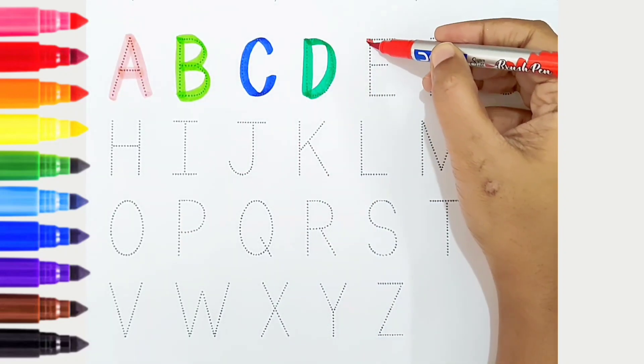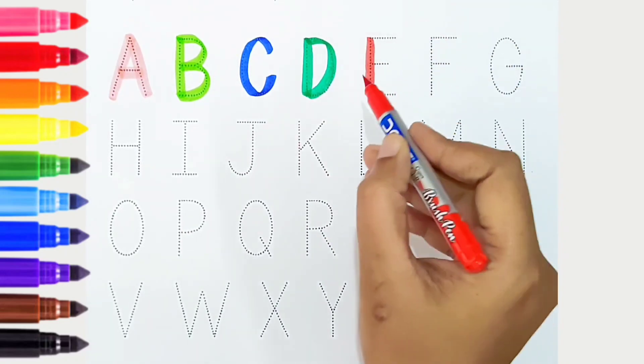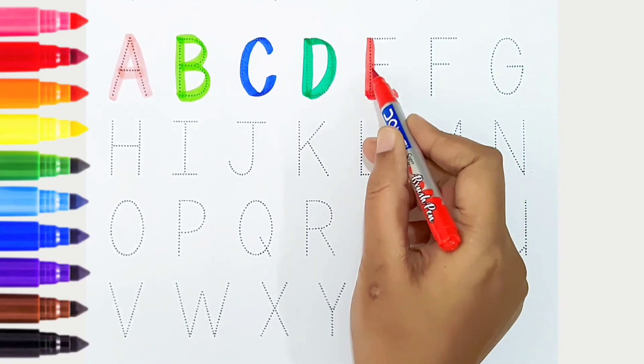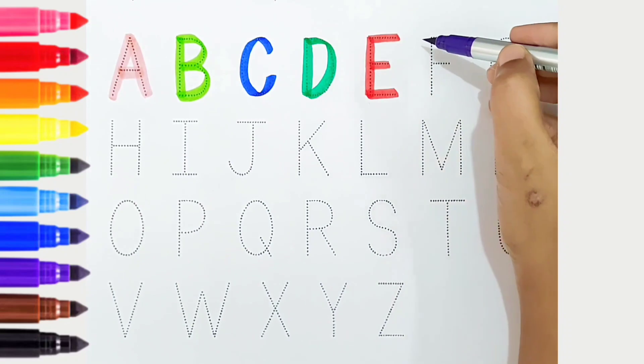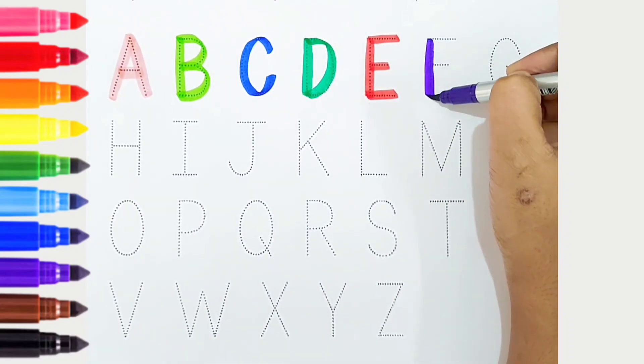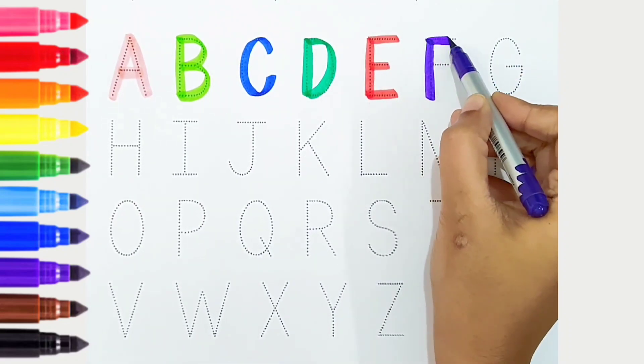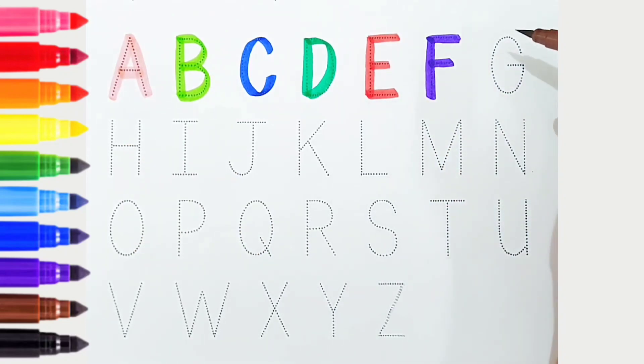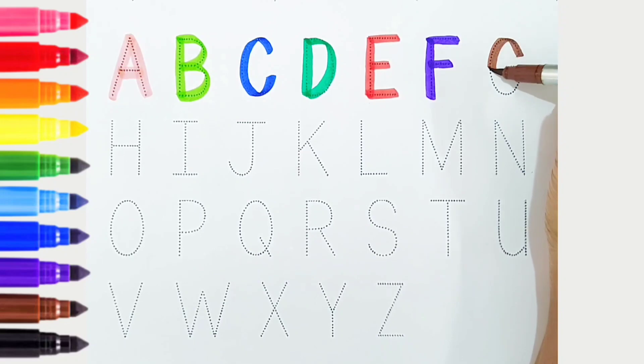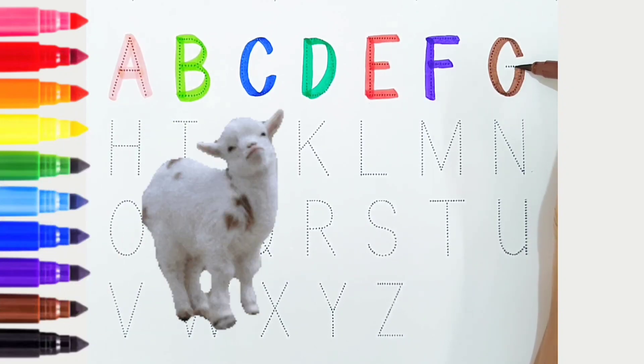E, red color, is for elephant. F, violet color, is for fish. G, brown color, is for goat.